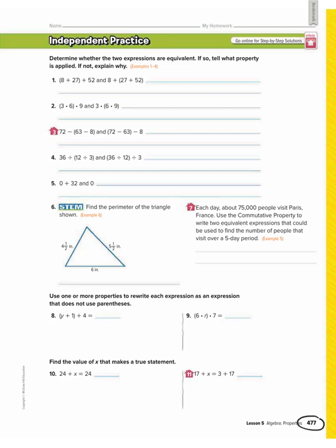We are on workbook page 477, and we're going to be doing Chapter 6, Lesson 5, which is Properties. We're going to do the independent practice problems together, so make sure you're following along and writing in your workbook. Here are the directions: Determine whether the two expressions are equivalent. Equivalent means to be equal, but they look a little bit different. If so, tell what property is applied. If not, explain why.